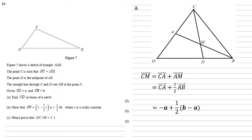And AB, well, again, we can think of this going from A to O to B. We know that O to B is B. We know that A to O is minus A. So AB must be B minus A. Hence, CM is minus A plus a half B minus half A. Rearranging this, we get minus three over two A plus half B.